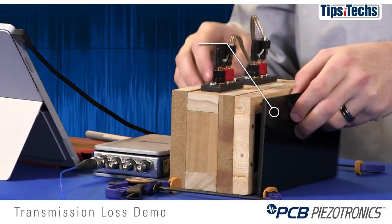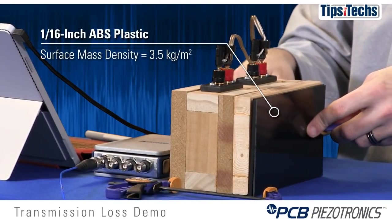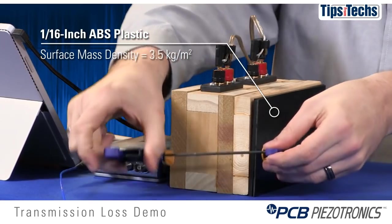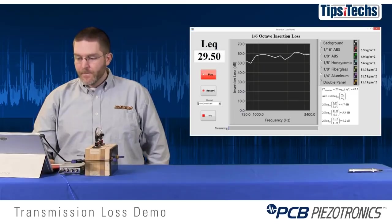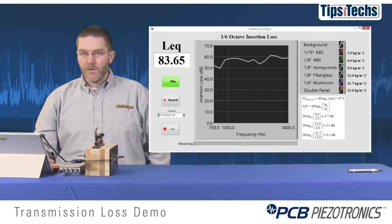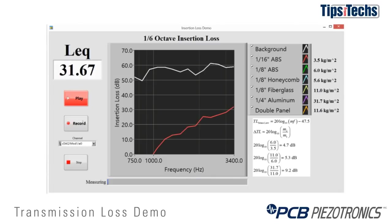We'll start with the thinnest material — this is the 1/16-inch ABS. It has a surface mass density of about 3.5 kilograms per meter squared. You can already hear the difference in the quality of the sound coming through that panel. At 750 Hz we have almost no insertion loss with this panel, and at 3400 Hz we have almost 30 decibels of insertion loss.